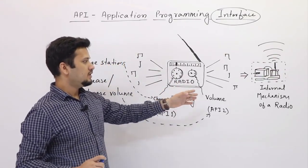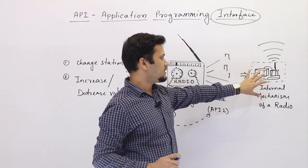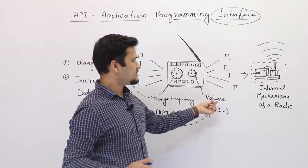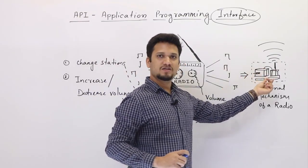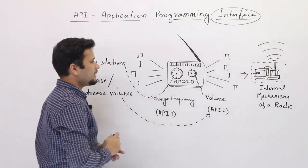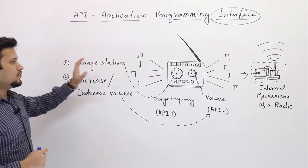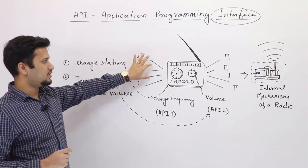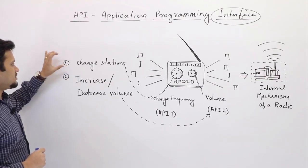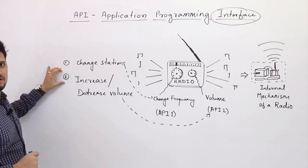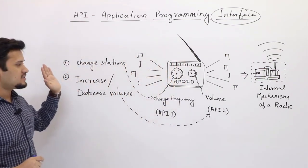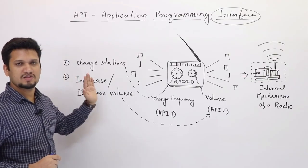Internally this system works — for example, it will have a radio receiver, and for volume adjustment there will be a system that adjusts the currents, so it will have some internal mechanism. But from the perspective of a listener who is listening to music or any station, it has got two things that it can modify: it can either change a station or increase or decrease the volume. As the user of this system, you are only concerned with what you want to achieve.